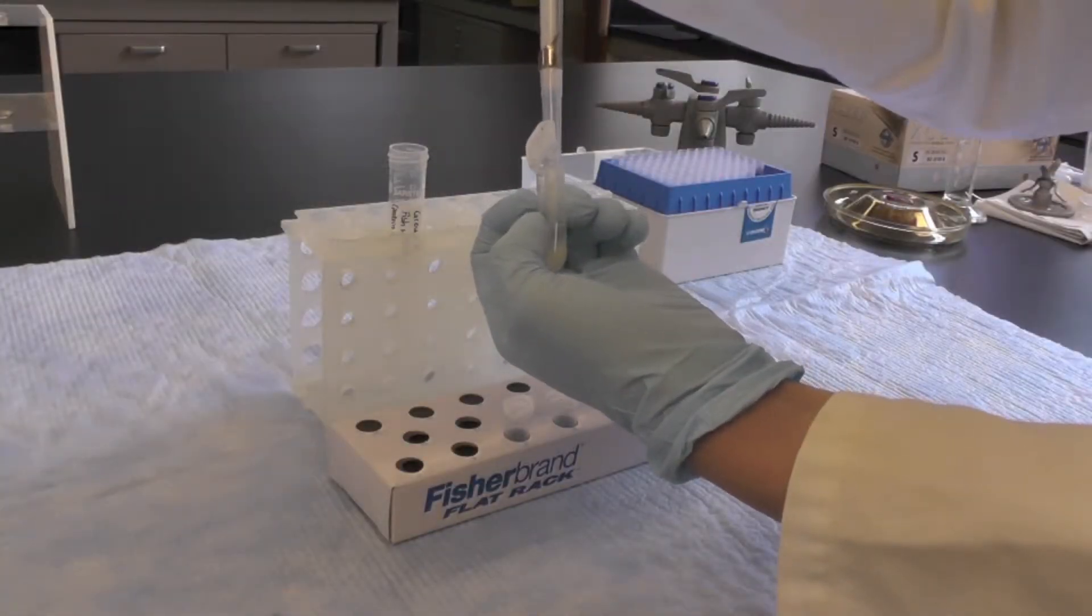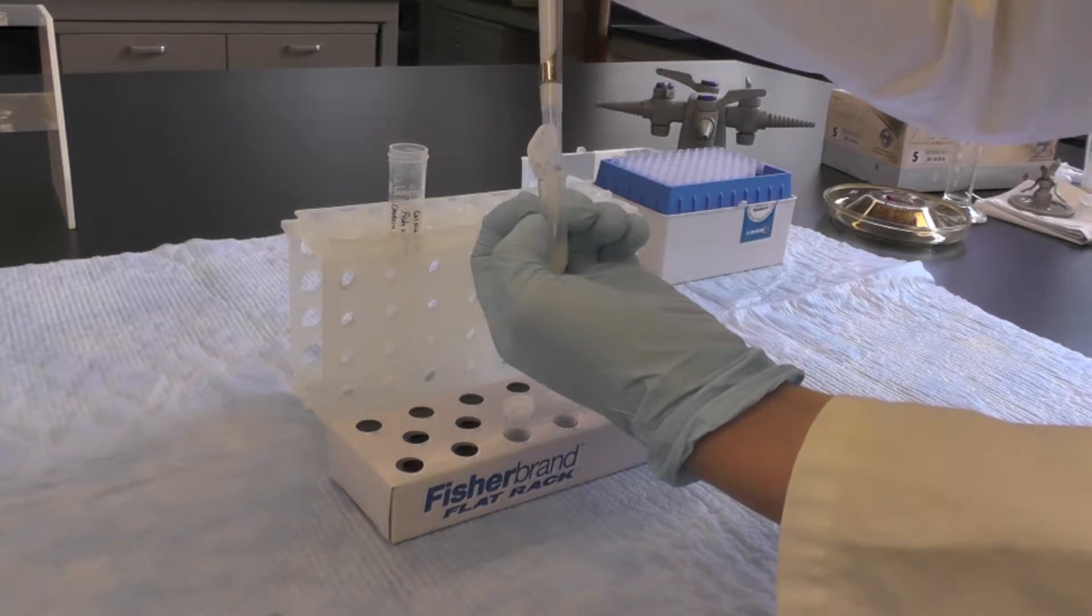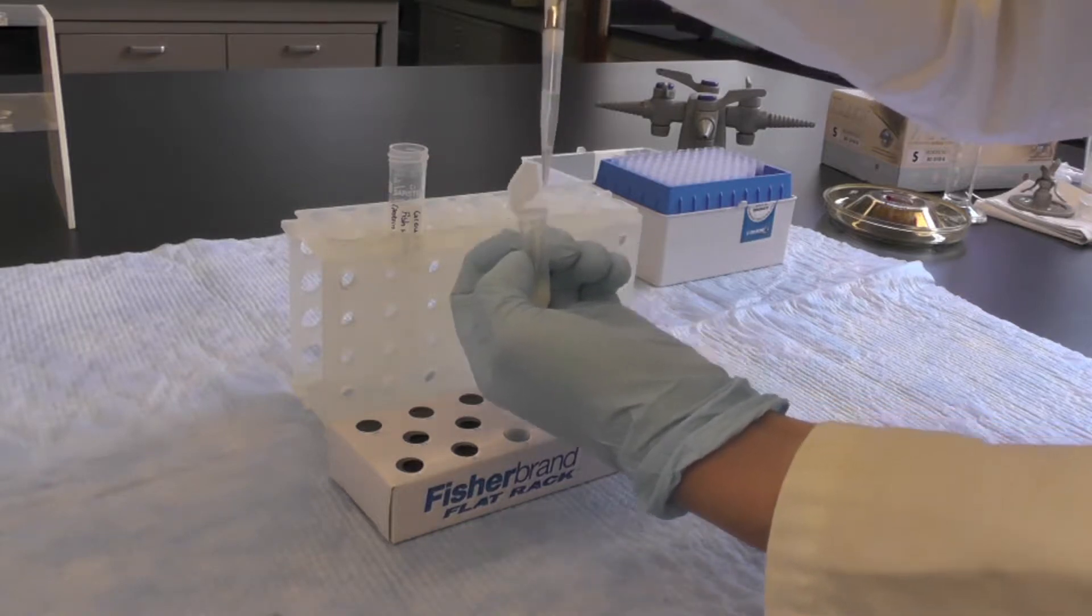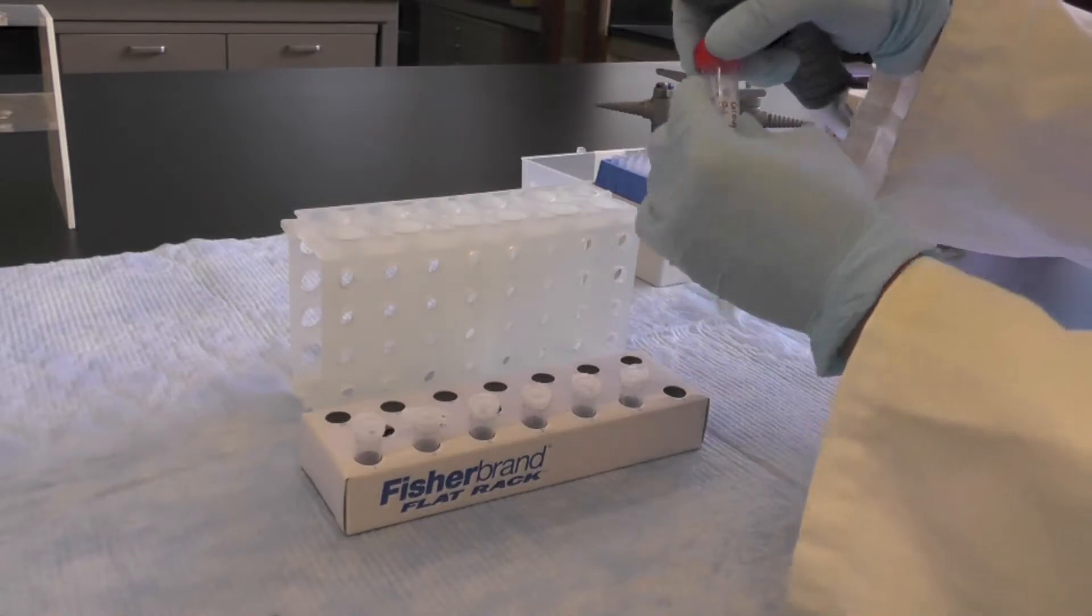Using a pipetment P1000 set to 1000 µL, collect the supernatant from all 6 microfuge tubes into a 15 mL falcon tube.